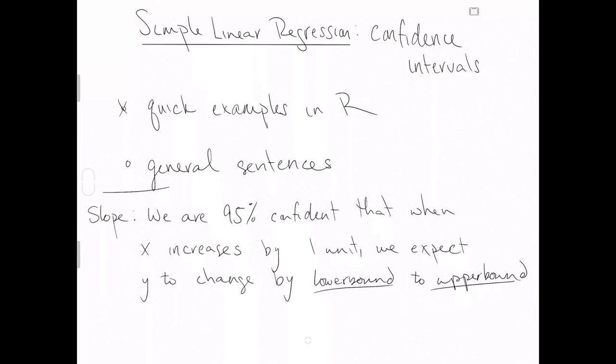So I tried to write the general sentence even more generally so that you could say if lower bound and upper bound are both negative or both positive, change is appropriate. But really, you could be more specific in your examples like we were for the Elmhurst College data set where the slope confidence interval had both negative lower and upper bound terms. So hopefully this was a quick video on helping you through confidence intervals for simple linear regression.